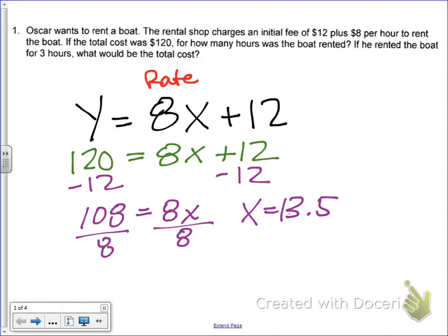Now, remember, we just talked about it. Whenever we're dealing with real life problems, we have to include the rate or the units. We have to say 13.5 what? And remember, if y was the money, x was the time, which in this case is hours. So if we spent $120 on our boat, that means we spent 13.5 hours on the boat. That's how long we rented it for. Now, here is the next question. So we answered that first question. If the question was, if it costs $120, how many hours was the boat rented? We know that it was for 13.5 hours.